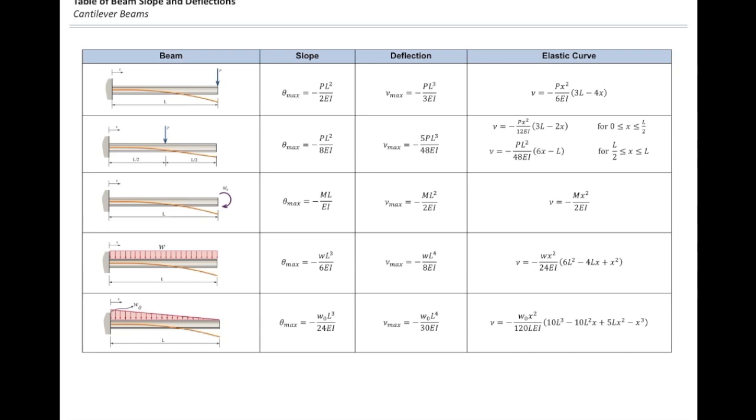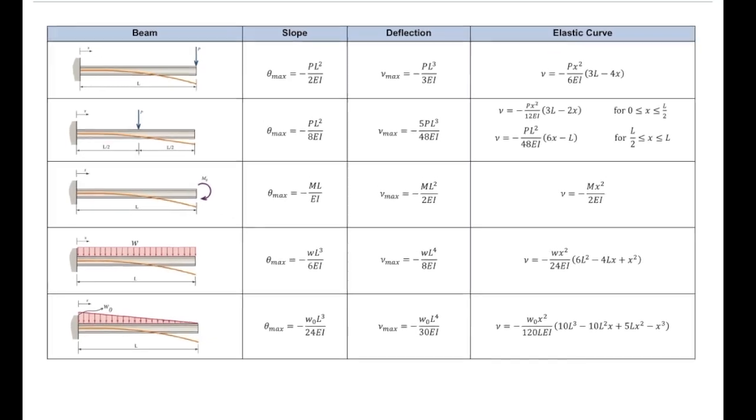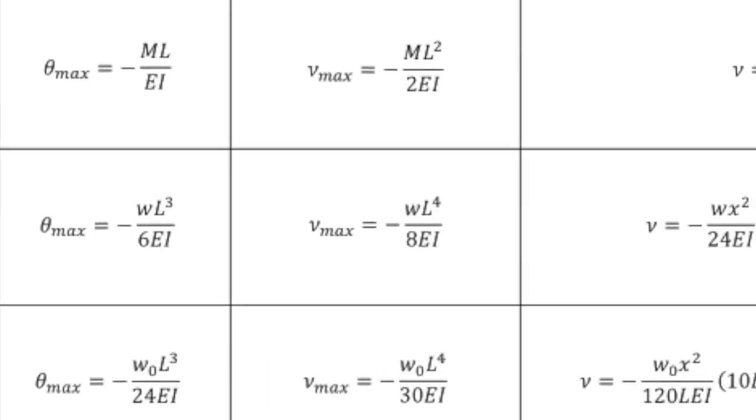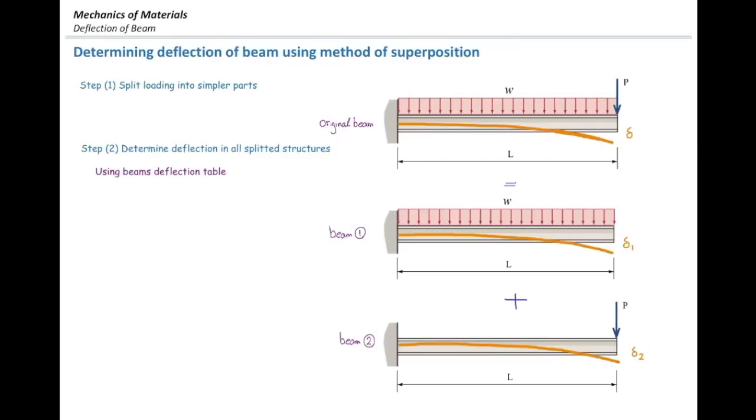In this case, we're just looking for how much is the deformation at the very right end. We know that the deformation at the very right end is the maximum deformation. So, I'm going to go and use this equation. WL to the fourth over 8EI. So, deformation in that beam would be this value.